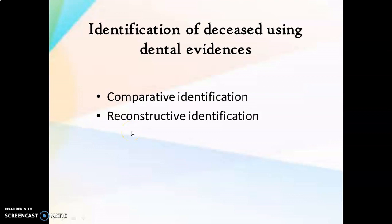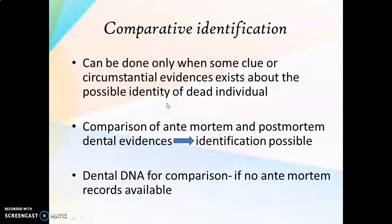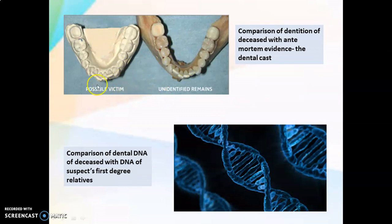Identification of deceased individuals is usually done in two ways: comparative identification and reconstructive identification. Comparative identification is done only when some clue or circumstantial evidence exists about the possible identity of the dead individual. For example, if we collect ante-mortem or pre-death dental records of a suspected individual, these can be compared with post-mortem dental evidences. If there is a match, the identity can be confirmed. Even if ante-mortem dental records are not available, dental DNA obtained from the teeth of the dead individual can be compared with the DNA of a first-degree relative. A comparison between the pre-death data and the post-mortem dental evidences can establish the identity of an unknown human body.